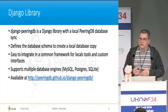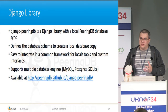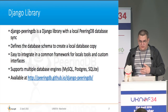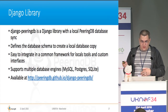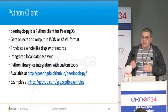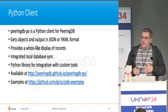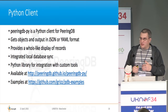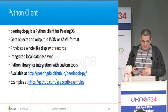There are two libraries available. First, a Django library with a local database sync that defines the schema needed to create a local database copy, easy to integrate into whatever tools or framework you're using. Second, a Python client that can get and display objects in either YAML or JSON format, or give a Whois-like display of records. It also has a local database sync and is for integration into custom Python tools. Grizz has also provided some examples.